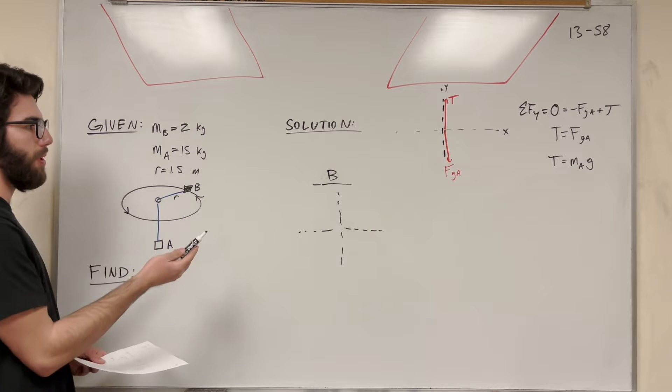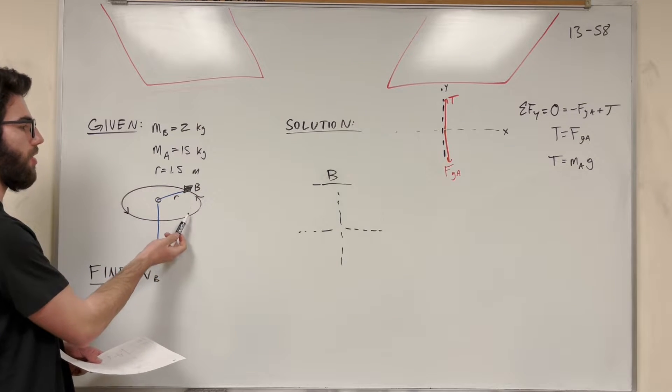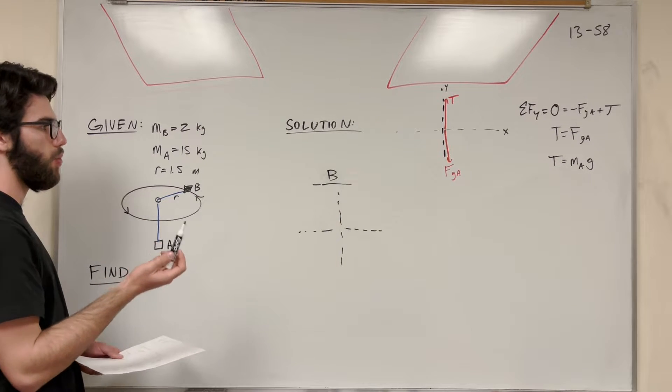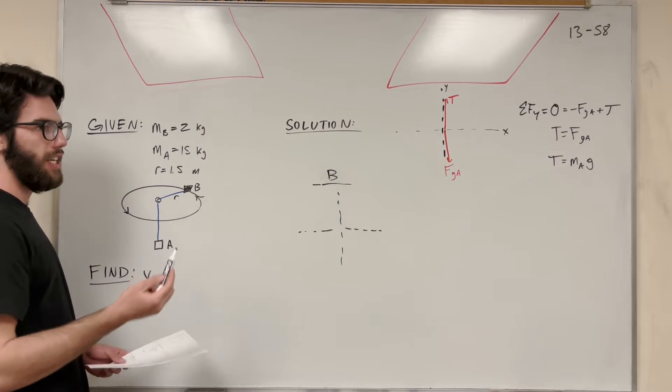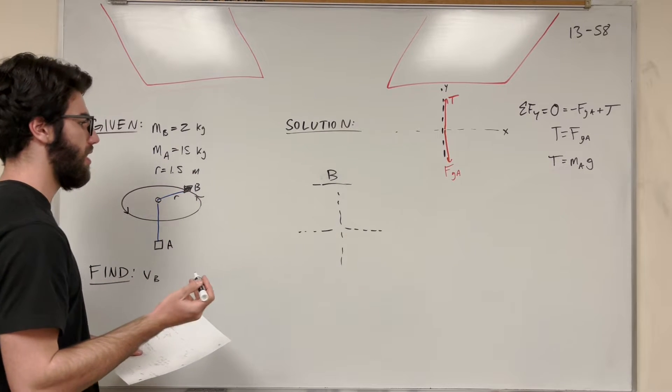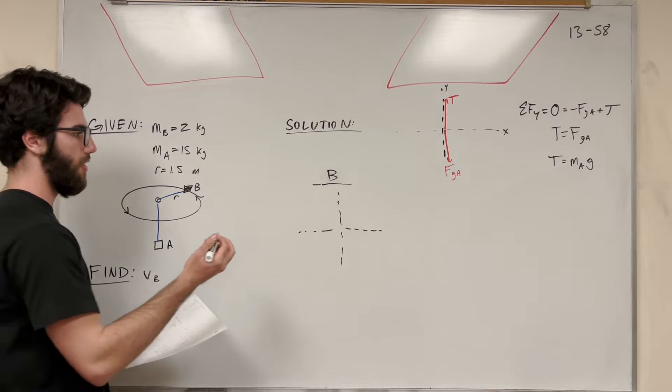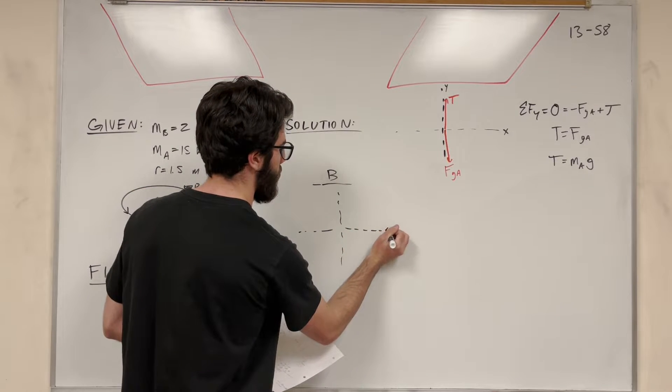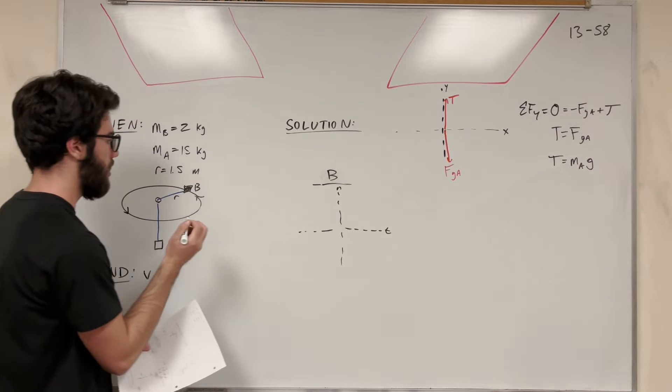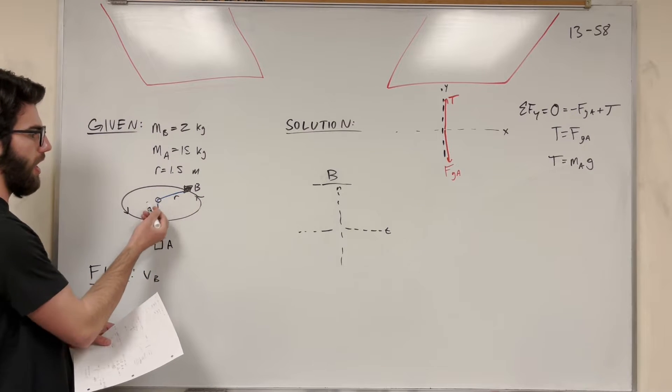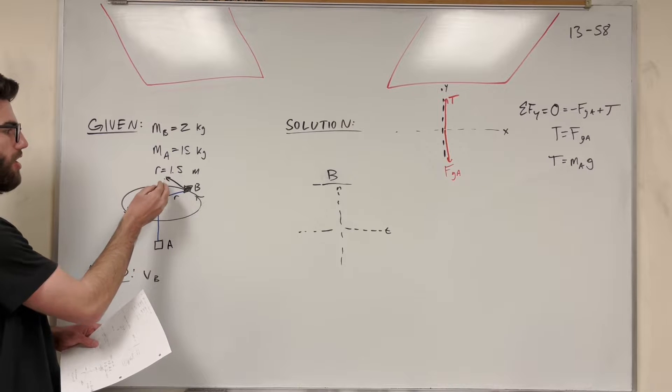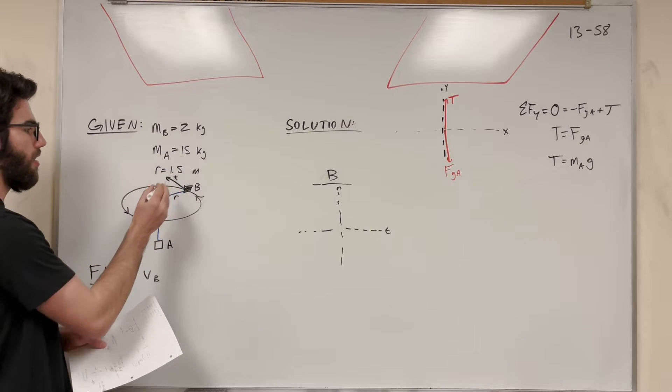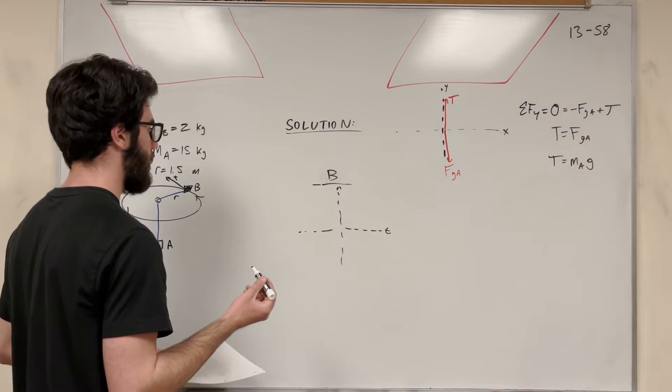So block B, we might want to split it up into a different coordinate system because we want to use normal tangent components because normal tangent components allows us to find velocity. And that would make sense later. So if we were making this, let's make this the tangent direction and this the normal direction. So looking at our graph, the normal direction would be inwards where the tension is pulling, and the tangent direction is just tangent to that path that it's following.